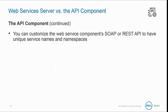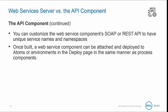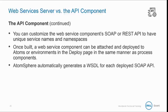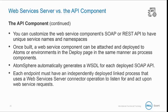You can customize the web service component's SOAP or REST API to have unique service names and namespaces. Once built, a web service component can be attached and deployed to Atoms or environments in the deploy page in the same way as process components. AtomSphere automatically generates a WSDL for each deployed SOAP API. Each endpoint must have an independently deployed linked process that uses a web services server connector operation to listen for and act upon web service requests.